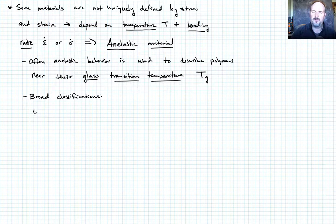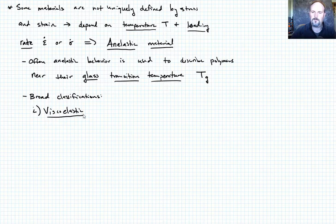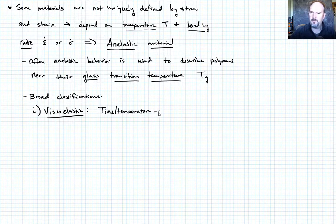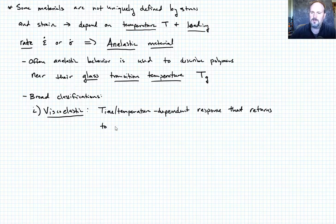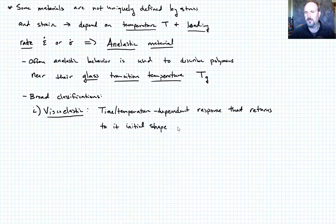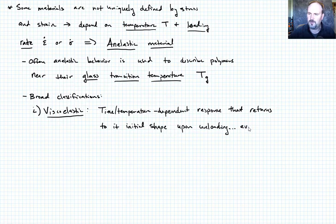Anelastic material behavior falls into two broad classifications. The first one is viscoelastic. In viscoelastic behavior, we're going to have a time or temperature dependent response, but it returns to its initial shape upon unloading — eventually, not right away. And that has some implications we'll talk about.